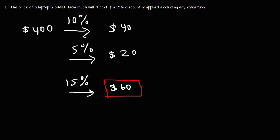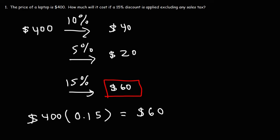If you wish to use a calculator to get the exact answer, multiply $400 by 15% as a decimal. To convert a percent to a decimal, divide by 100. If you take 15 divided by 100, you get 0.15. So 400 times 0.15 is $60. Those are two ways in which you could determine the percent of a number.